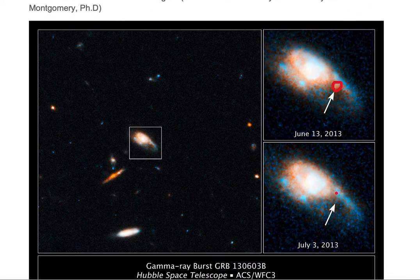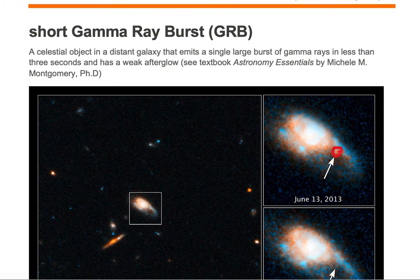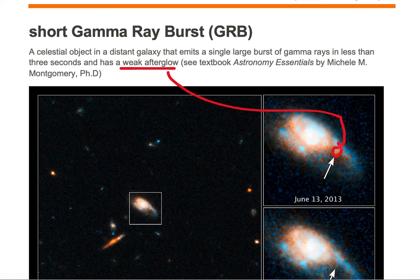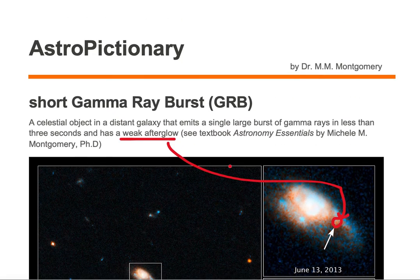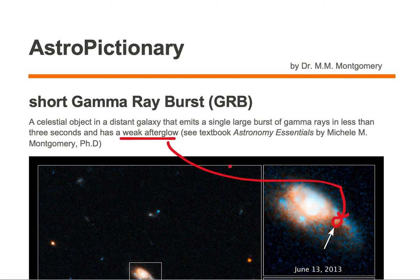A couple weeks later, no afterglow was present. This afterglow is a weak afterglow, and because the gamma-ray burst lasted only a few seconds, this is an example of a short gamma-ray burst — short in time, referring to the duration that the burst happened over.